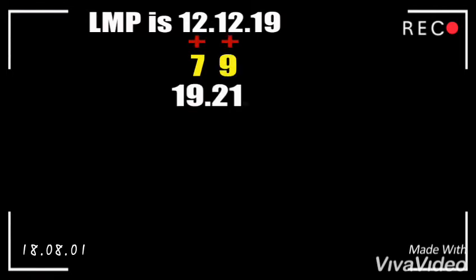The next example: the last menstrual period is 12/12/19. Following the same steps, we add 7 to 12 to get 19 for the date, and add 9 to 12 to get 21 for the month. Again, we start by calculating the month first, so 21 minus 12 gives us 09.